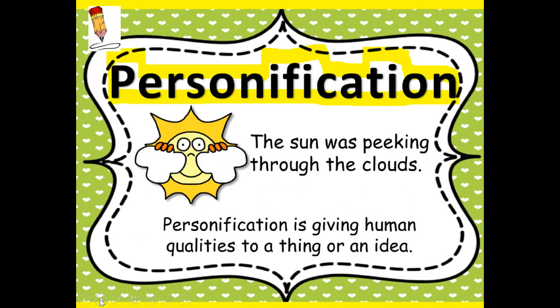Write this down: personification. This is your chance to write down the type of figurative language. It's a very long word — it has the word person in it as a clue. Personification: the sun was peeking through the clouds. So the sun was acting like a person or a human. Personification is giving human qualities to a thing or an idea. Make sure you write that figurative language down.